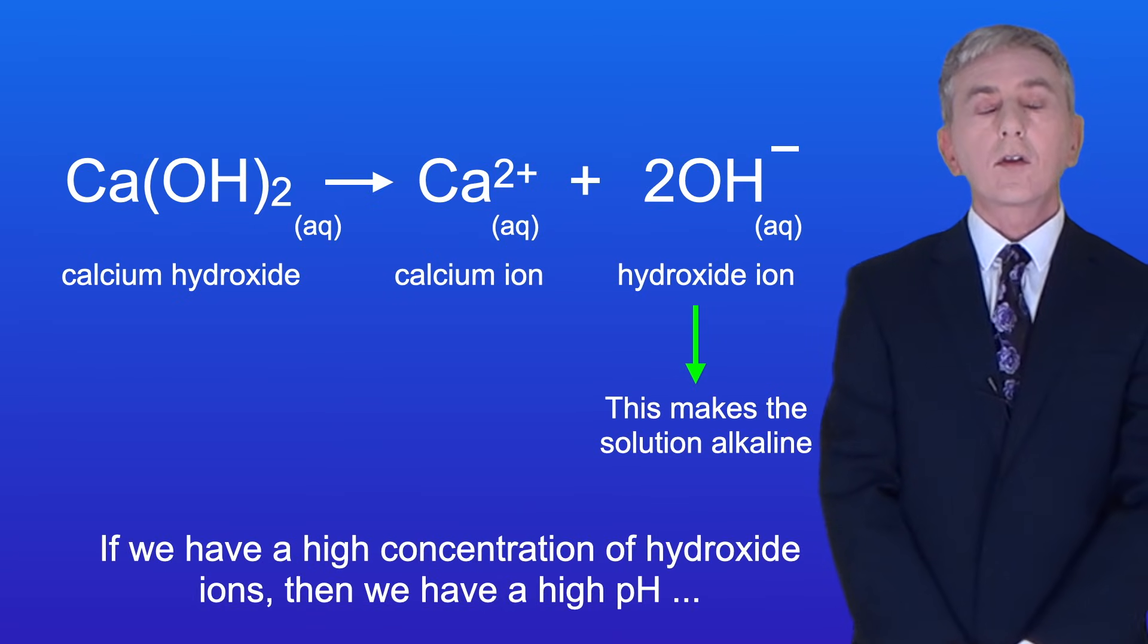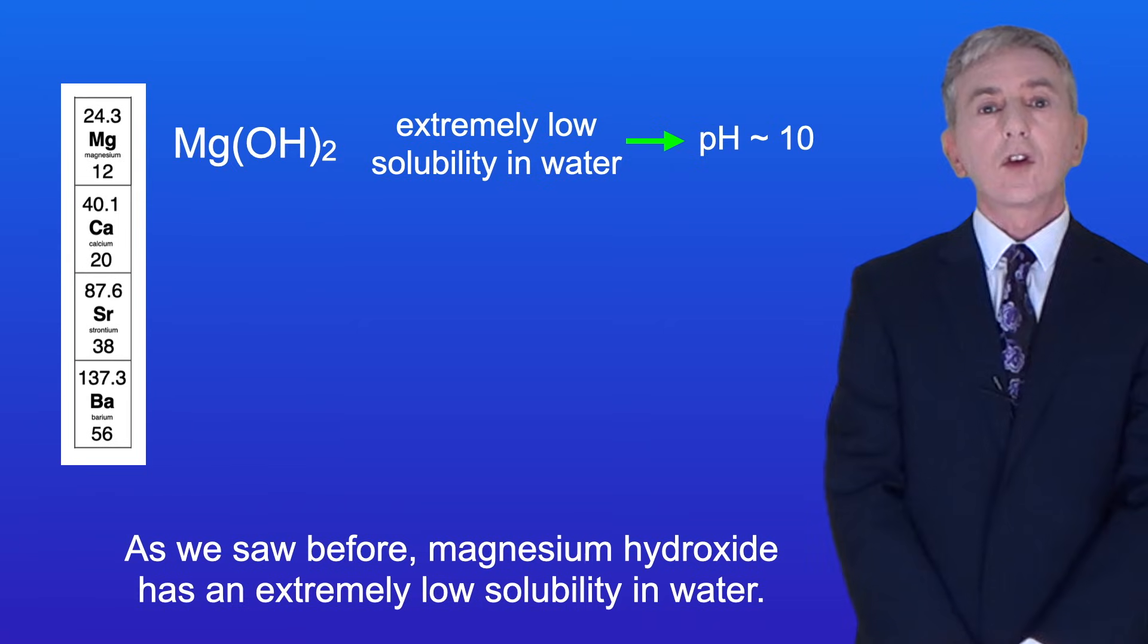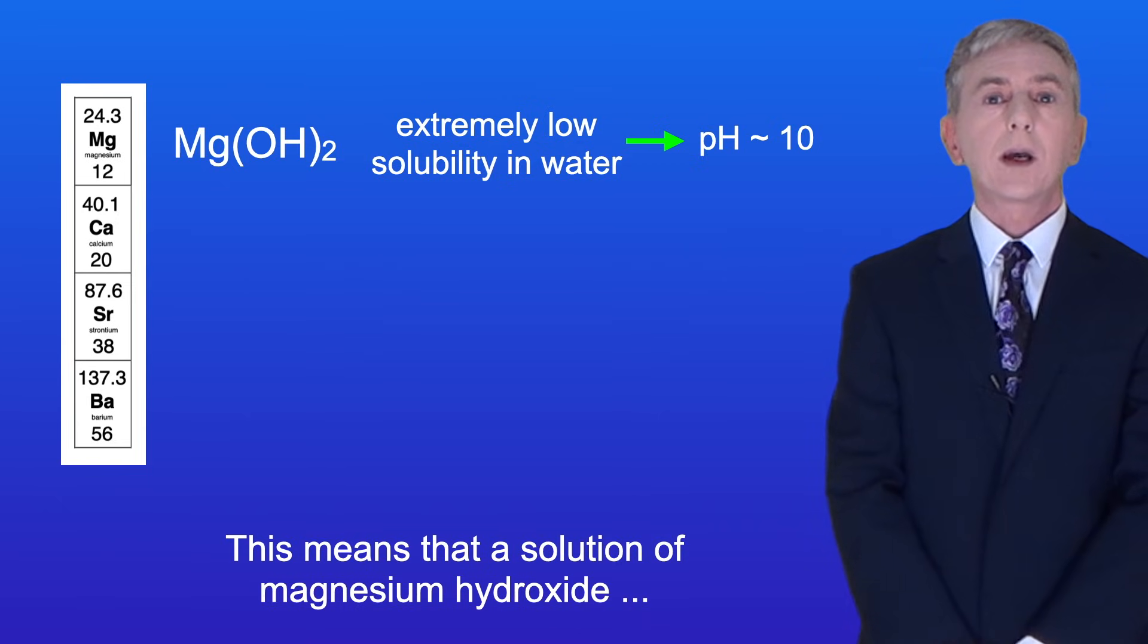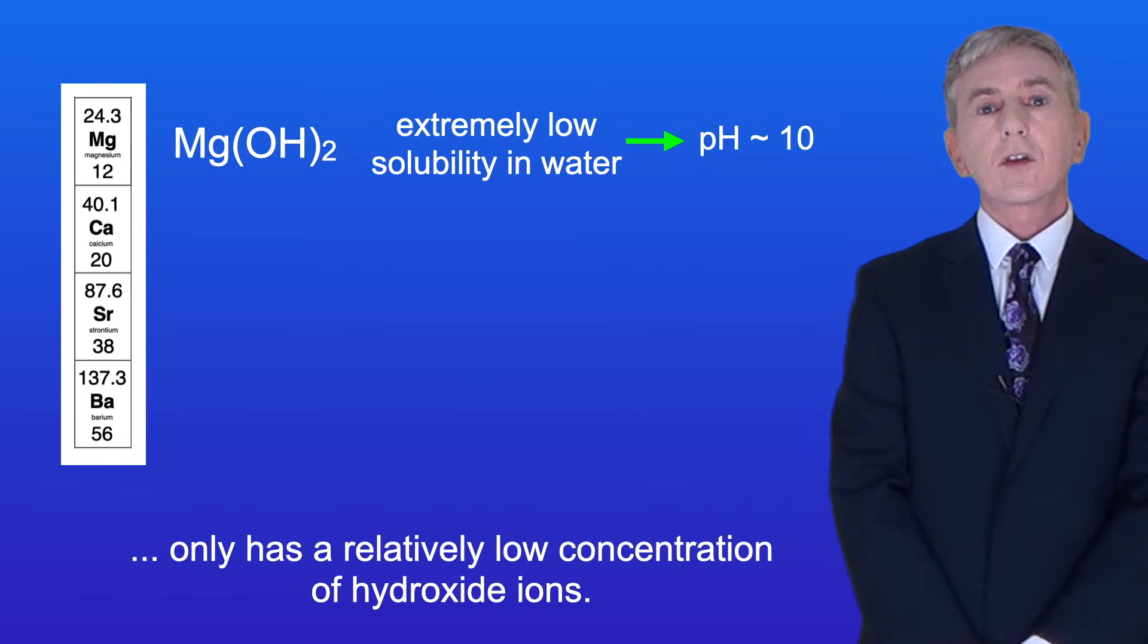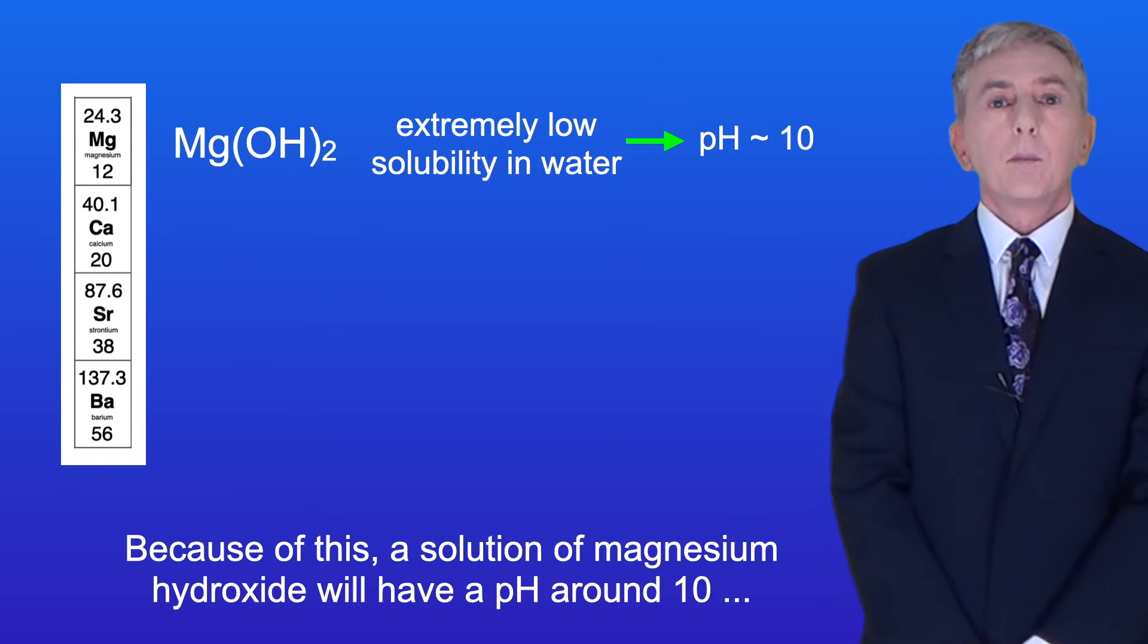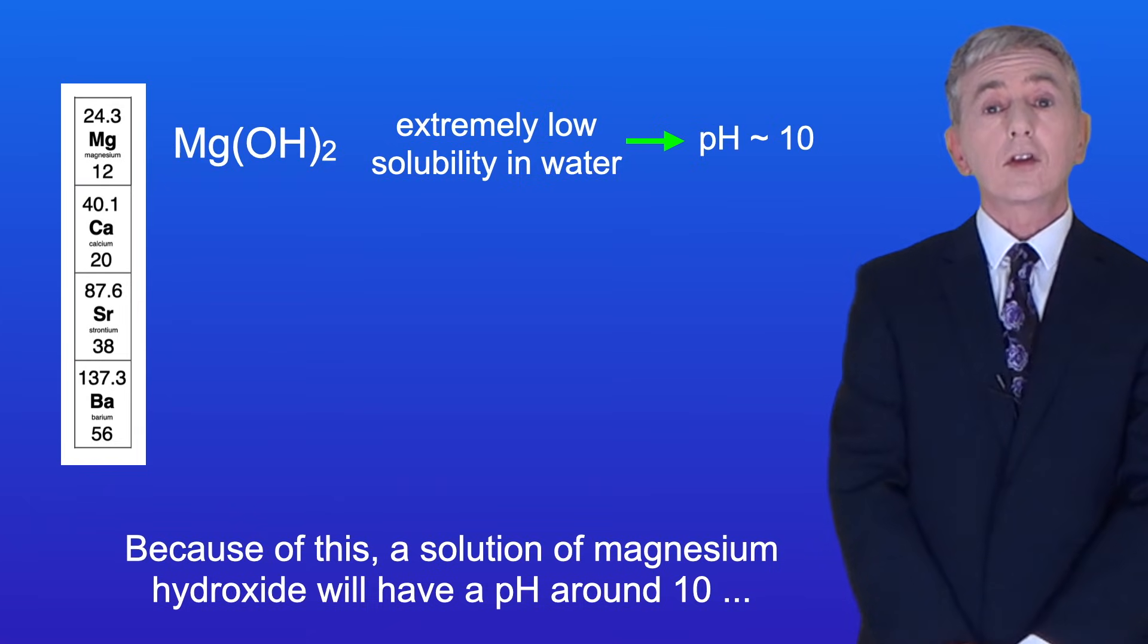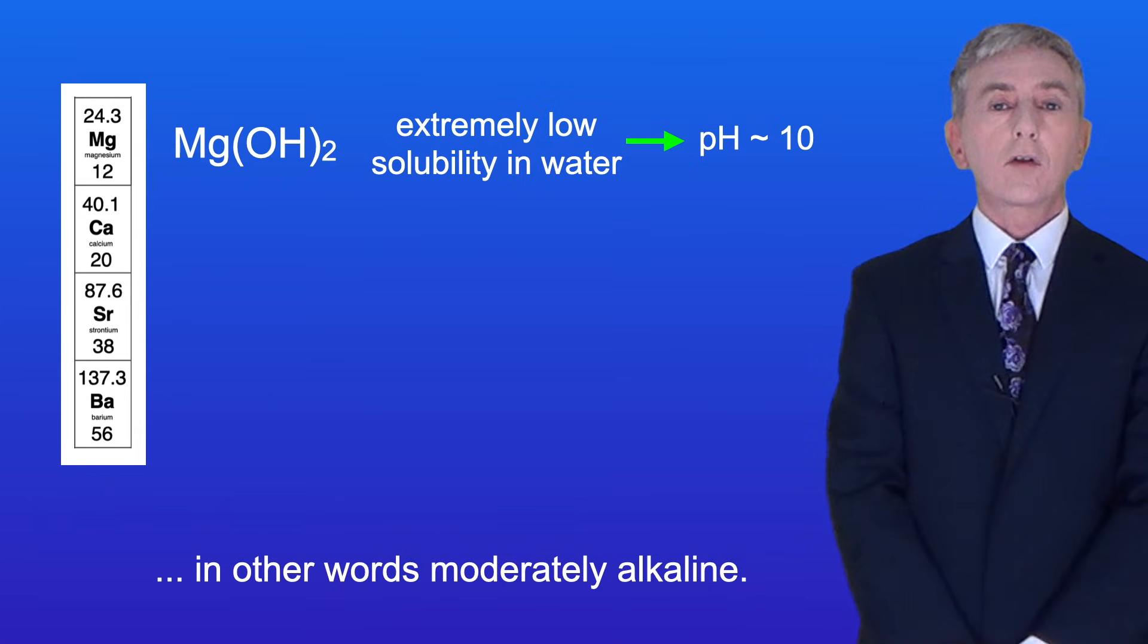If we have a high concentration of hydroxide ions, then we have a high pH, in other words, a very alkaline solution. As we saw before, magnesium hydroxide has an extremely low solubility in water, so this means that a solution of magnesium hydroxide only has a relatively low concentration of hydroxide ions. Because of this, a solution of magnesium hydroxide will have a pH around 10, in other words moderately alkaline.